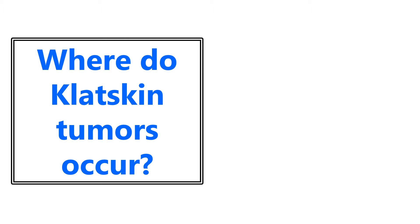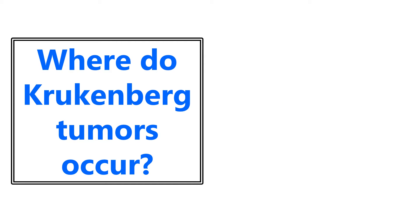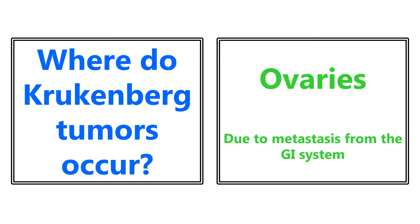Where do Klatskin skin tumors occur? There are all these random tumors they like to throw around with fancy names. Klatskin tumor is one of them, and that's going to be in the hepatic ducts. To follow that up, where do Krukenberg tumors occur? These occur in the ovaries, and an important point to note is that this is due to metastasis from the GI system. So Klatskin is hepatic ducts, Krukenberg is ovaries.